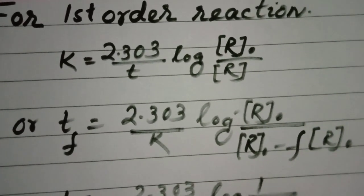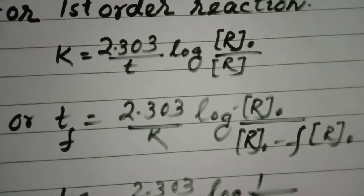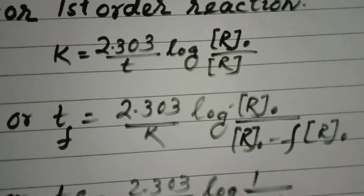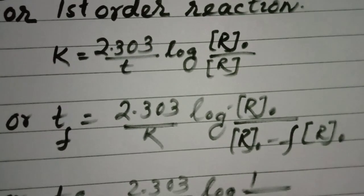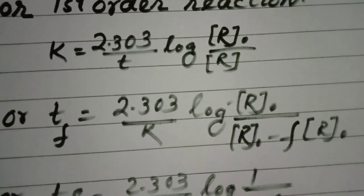At any fraction of time, or tf, you can write 2.303 by k log r0 by r0 minus f r0.